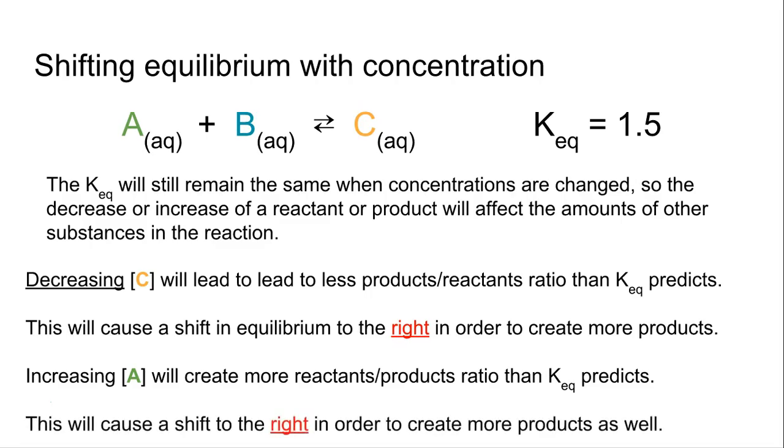It's going to react it with B and make more C. So that will also make more C, which is considered to be a shift to the right. We're going to have the forward reaction go more because we had so much A in there, it wants to get rid of it. Both decreasing C and increasing A will make the forward reaction happen more likely than the reverse reaction. And that's what we call a shift to the right.